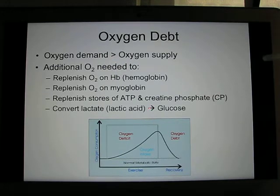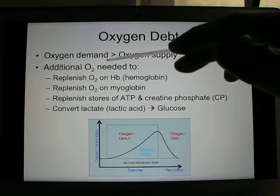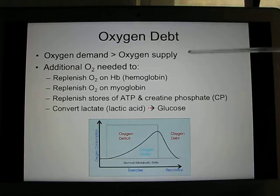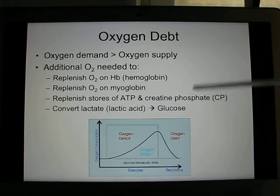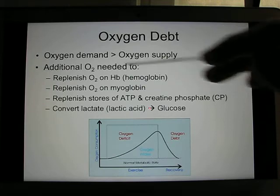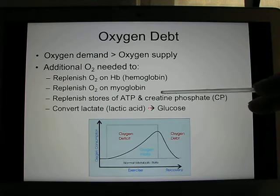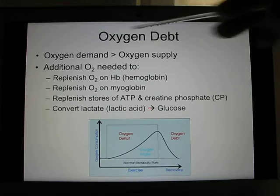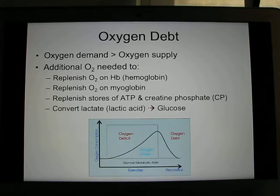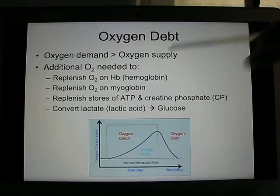When you exercise, you actually need a lot of oxygen, and you can reach a situation where your oxygen demand is higher than the oxygen supply. In that case, your muscle will borrow oxygen from other structures — one is hemoglobin, and the second one is myoglobin. Myoglobin is very similar to hemoglobin; it's a protein found in the muscle. You use that oxygen to quickly produce ATP. We call this oxygen debt, and since it's a debt, you have to pay it back. That's why after you exercise, you still breathe heavily for a few seconds to a few minutes, even though you are no longer exercising.